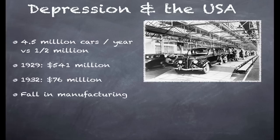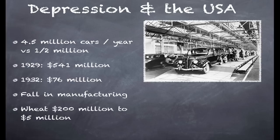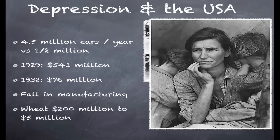There was a generalised fall in manufacturing, not just in cars. Wheat exports as well — before the Depression, 200 million dollars; after the Depression, this had fallen to just 5 million dollars. The fall in the price of wheat and agricultural products really hit American farmers very hard. And it happened at the same time as a climate crisis in the Midwest, resulting in a lot of genuine poverty and hunger in the Midwest of the United States.